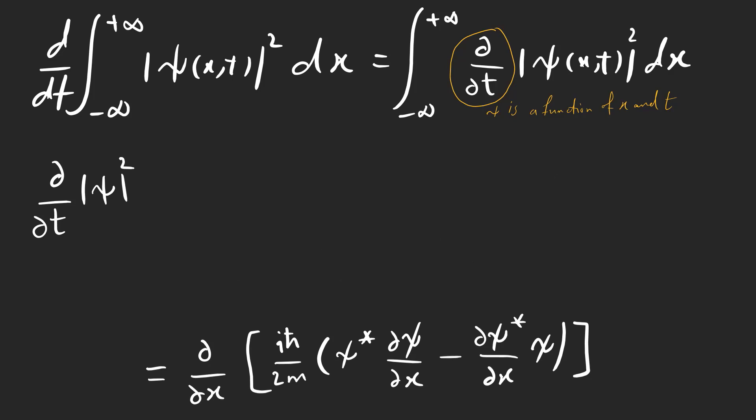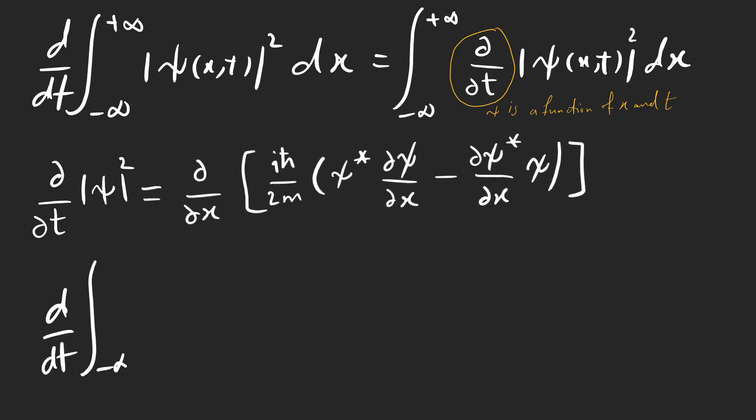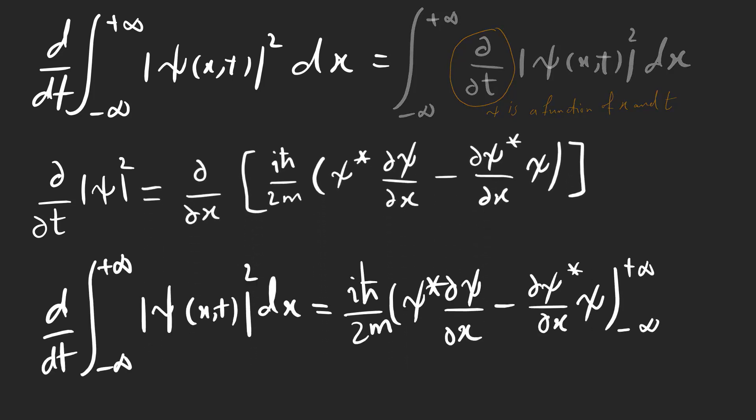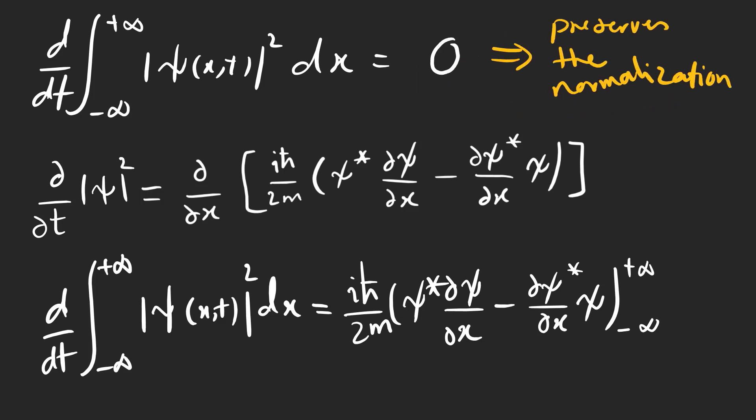Now, we can calculate the integral. Pay attention that as x goes to infinity, psi must go to 0 or it won't be normalized. So, the integral is constant, and if psi is normalized at time 0, it remains normalized.